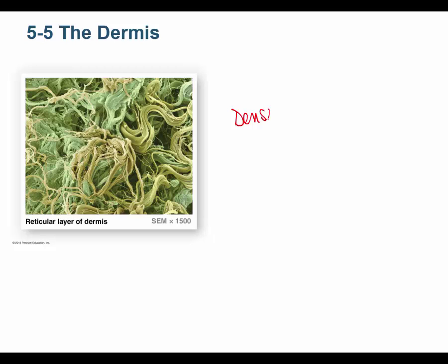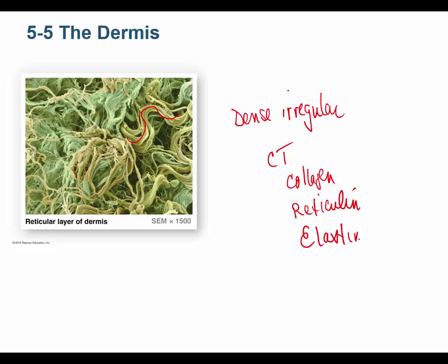Here's a scanning electron micrograph of the dermis showing dense irregular connective tissue — the fibers don't run in perfect parallel rows; they're somewhat irregular. The three fibers of connective tissue are collagen, reticulin, and elastin. In dense irregular connective tissue, collagen is the major fiber, but reticulin and elastin are also present, providing some flexibility.